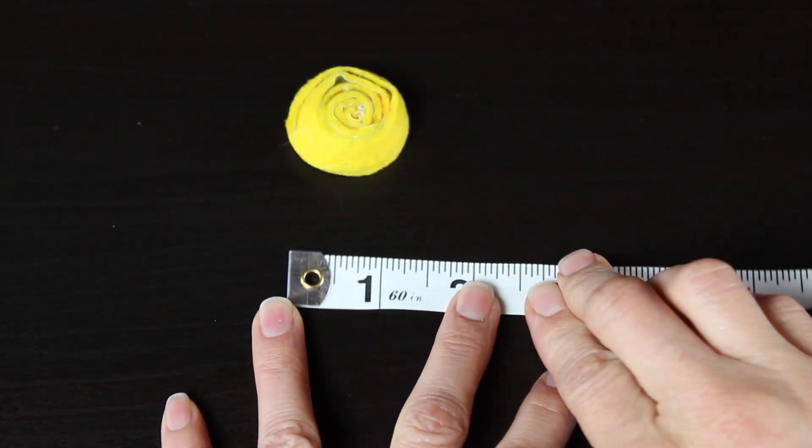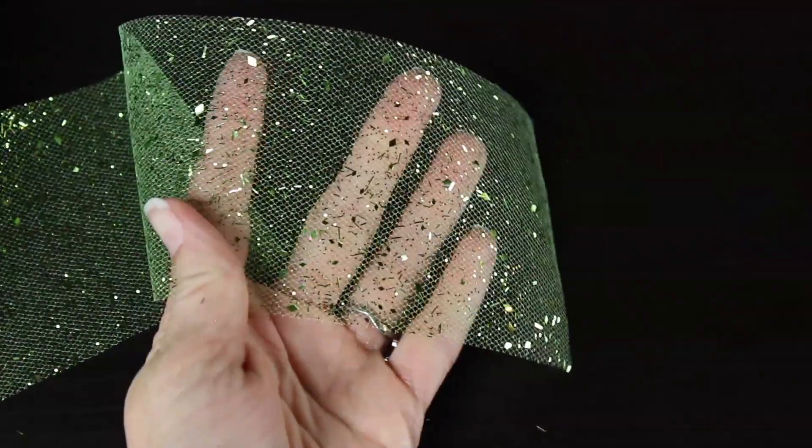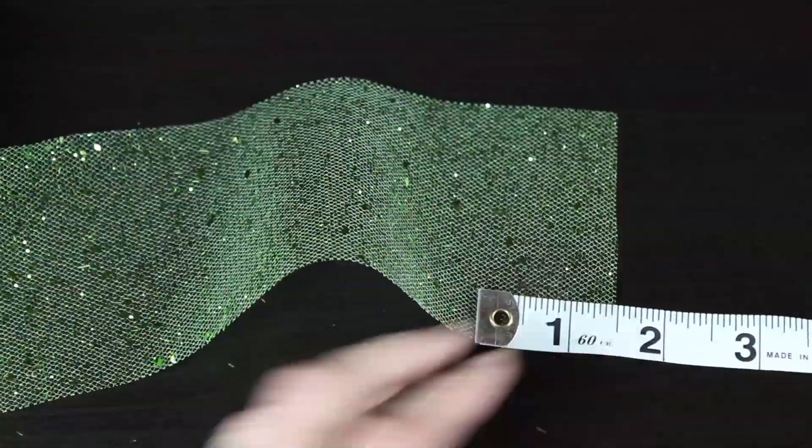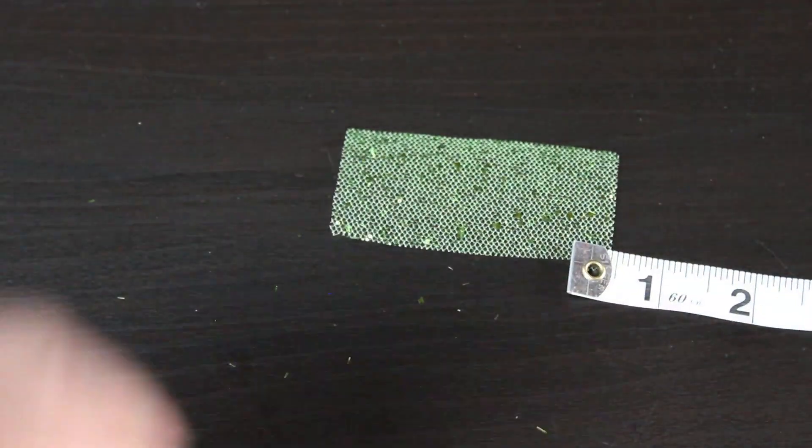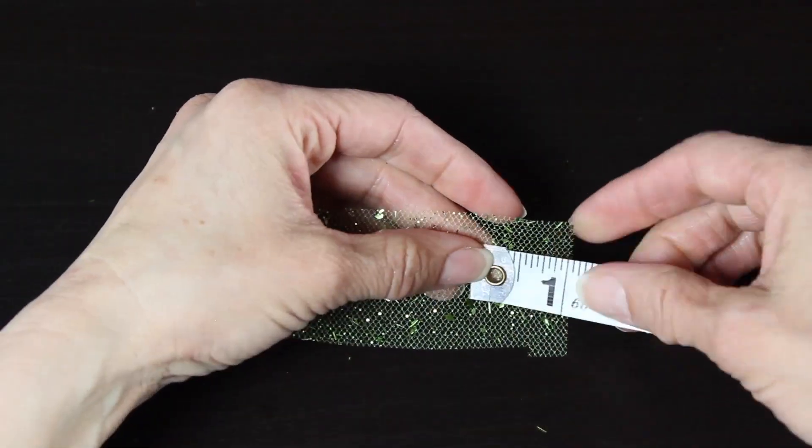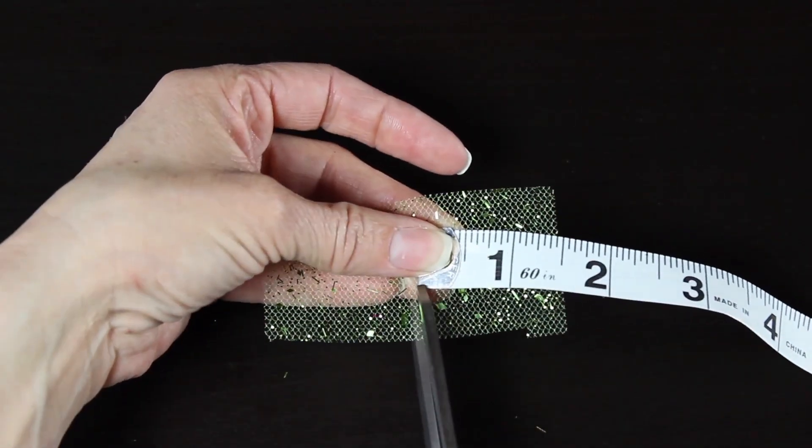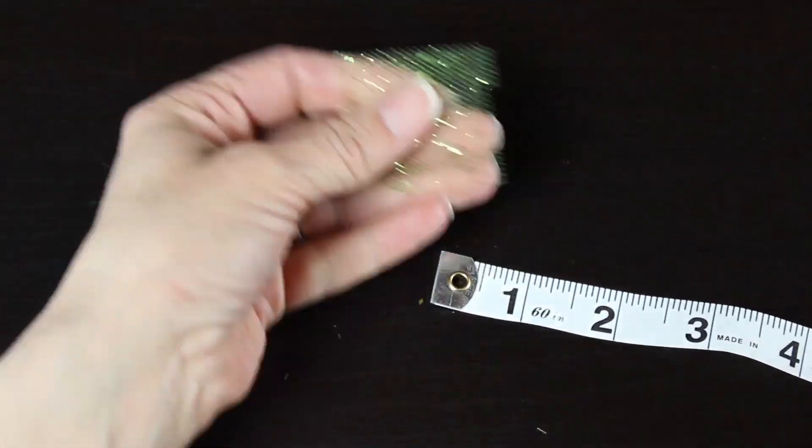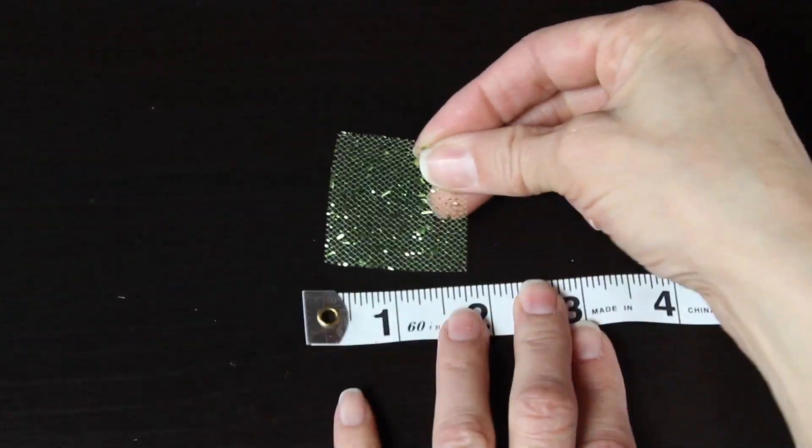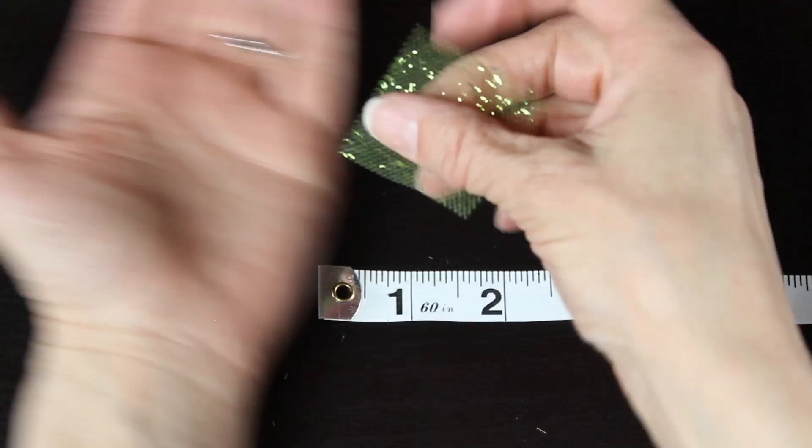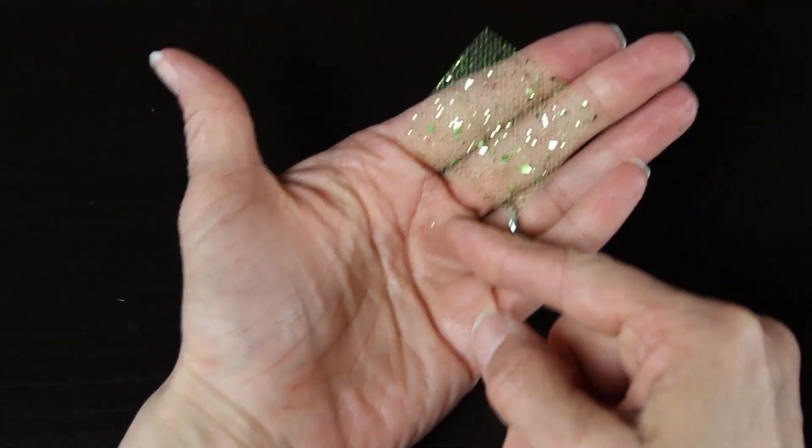Then you're going to grab your tulle and you're going to cut out a one and a half by one and a half inch square. And then what we're going to do is from this we're going to cut a leaf. So I kind of just round off two of the edges. It does not have to be perfect just to kind of give you that leaf shape.